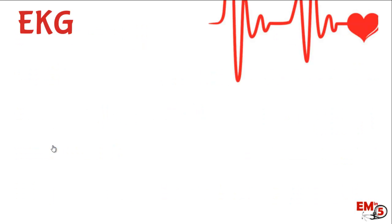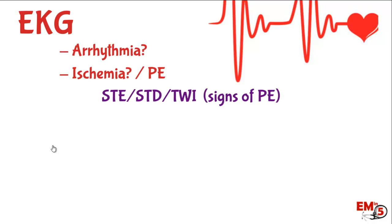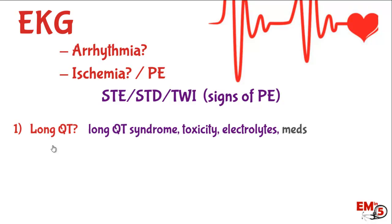Everyone needs an EKG — here are the things you have to look for and document. First, look for any arrhythmias or ischemia as you would on every EKG. Then there are four specific things for syncope. Number one: do they have a long QT? This could indicate toxicity, long QT syndrome, electrolyte abnormalities, or different medications. A long QT is important because it can lead the patient into an arrhythmia for a brief period of time.